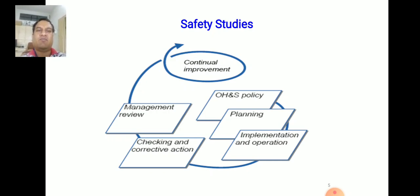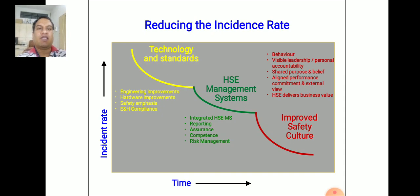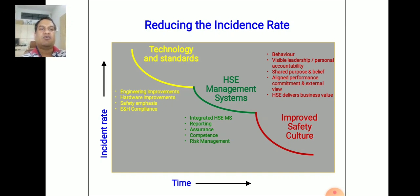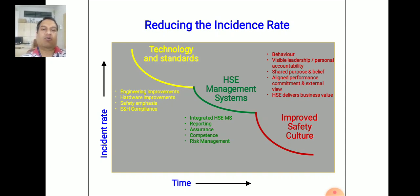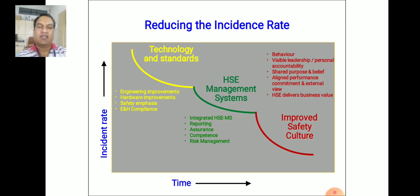It is not possible that 100% of work is done perfectly. For Continual Improvement, we should step forward and take the next steps to reduce the incidence rate. Different incidents can occur in industries, and historical and statistical data shows incidents happening in India as well as at the global level. With improved safety cultures, the incident rate or accident rate can be minimized over time.